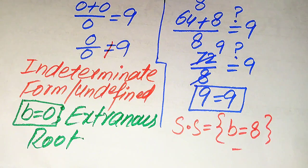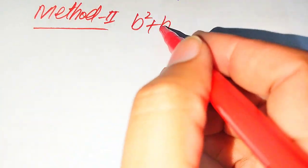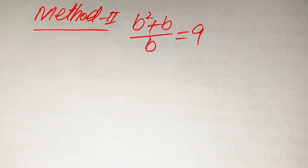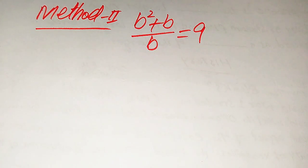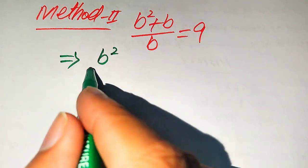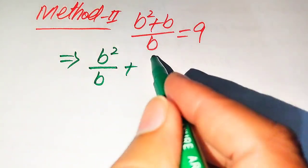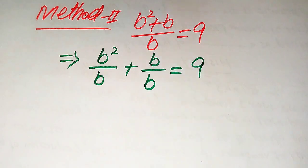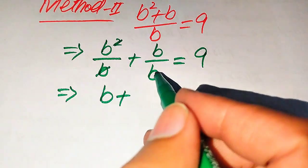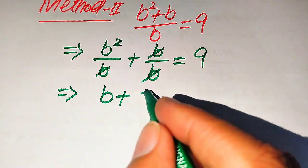Now we solve this problem using the second method. We copy down the given equation: b squared plus b divided by b equals 9. In this method, we break the fraction by writing b squared divided by b plus b divided by b equals 9. The b in the first term cancels to give b, and the b divided by b in the second term cancels to give 1, so we have b plus 1 equals 9.